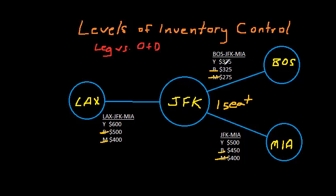If it was a Boston customer, the network contribution would be $375. And a local customer from JFK to Miami, the revenue would be $500.